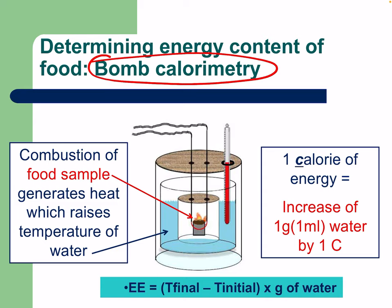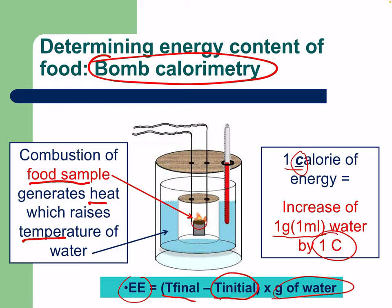To determine the energy content of food we use bomb calorimetry. In bomb calorimetry, combustion of a food sample generates heat which raises the temperature of surrounding water. Through that temperature change we can measure the energy exchange and determine the caloric content. One calorie of energy increases one gram of water by one degree. Our energy expenditure formula is: temperature final minus temperature initial, times the grams of water. It's surprising to think that all those food items on the shelf have gone through bomb calorimetry — often on very small samples, like 23 grams of cereal.